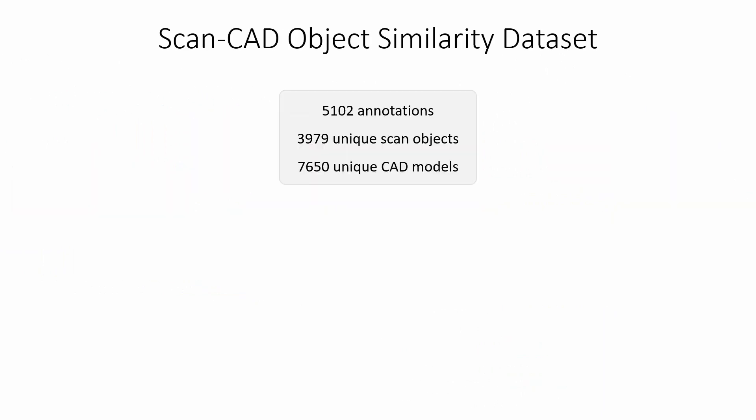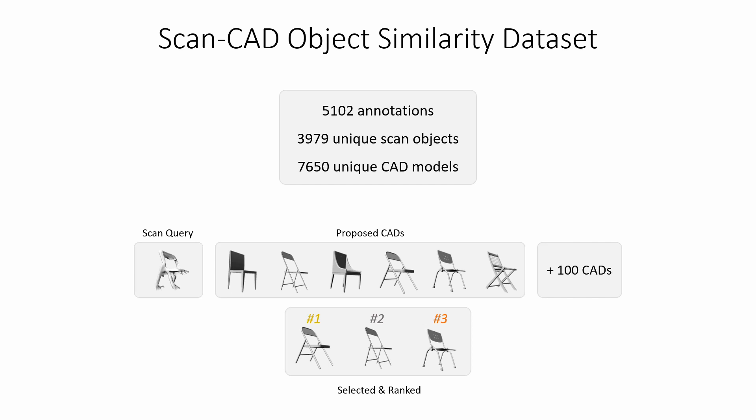Along with our method, we present a new ScanCAD object similarity dataset and benchmark, containing more than 5,000 annotations for 3,900 unique scan objects and 7,600 CAD models. Each annotation consists of a scan query and six CAD models. An annotator selects up to three most similar CAD models from the pool of six and ranks them. To reflect a diverse retrieval set, we supplement each annotation with 100 additional CAD models from a different class than the query.